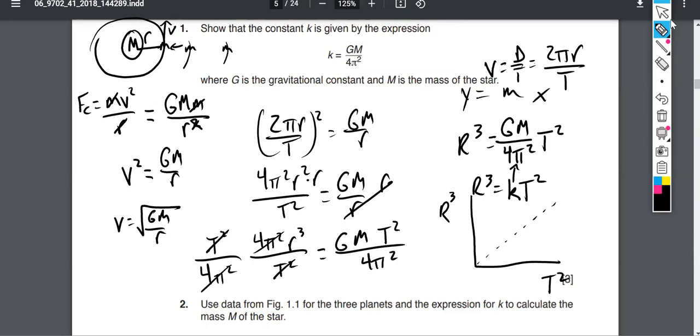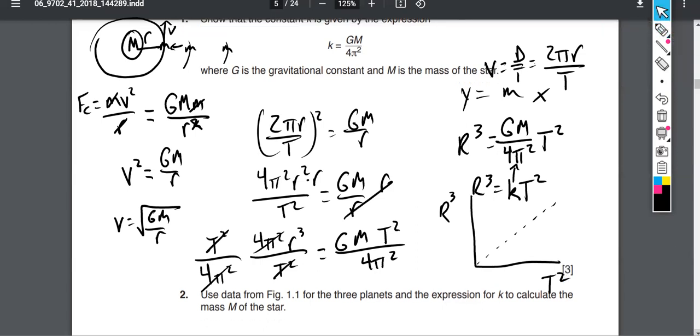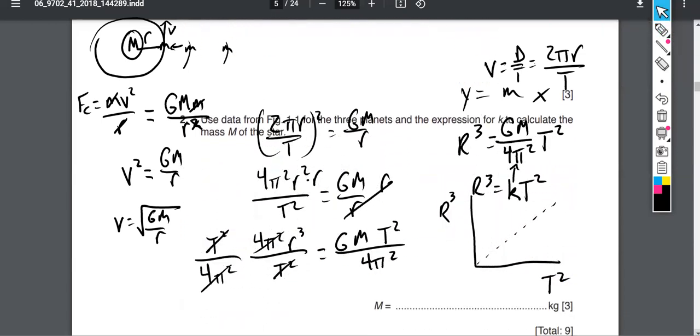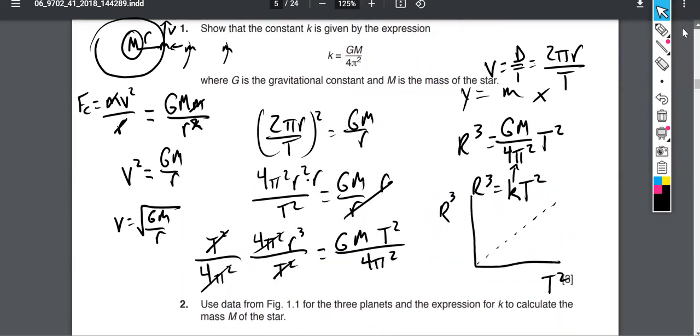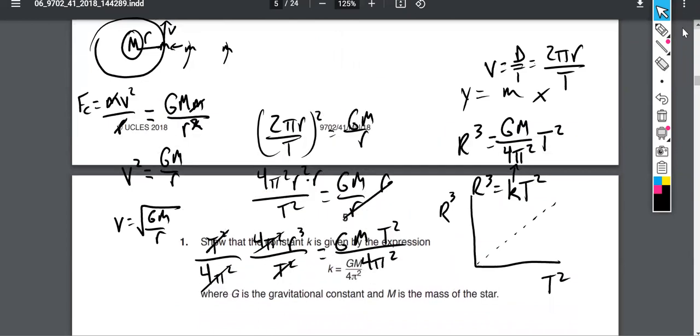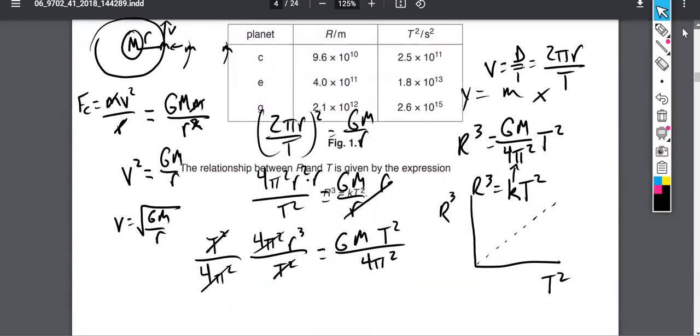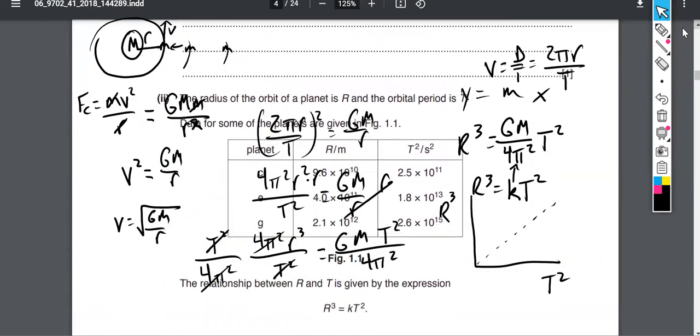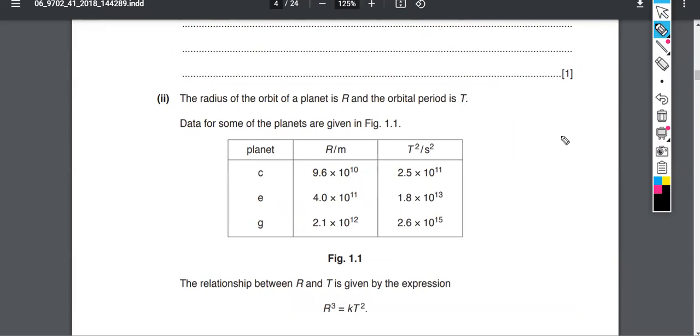So we have this relationship of r³ equals some constant k times t². And now we know what that constant actually is. It's Newton's gravitational constant times the mass of the central object, right? The thing being orbited divided by 4π². The last part of this is to calculate what the actual mass of the star is using some data from that table. So you can use whichever planet you like there. Go back up to the data to finish this calculation. Remembering that this is true, r³ equals Gm over 4π² times t².